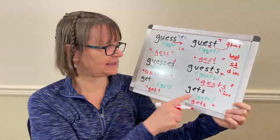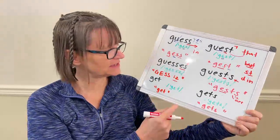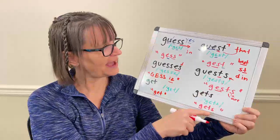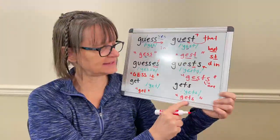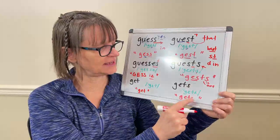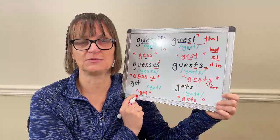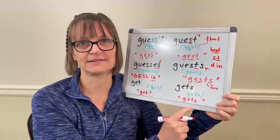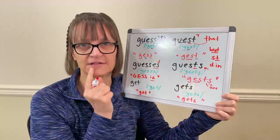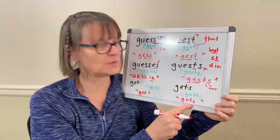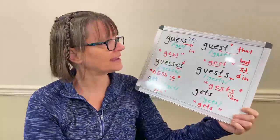The simple words 'get' and 'gets' — I include these here because 'guest' has the S and T sound, but 'gets' has the T and S sound. Make sure you can make a difference between 'I get' and 'he gets' — 'he gets it' — that we have that T and that S sound, because I don't want 'gets' to sound like 'guess' or 'guessed.'